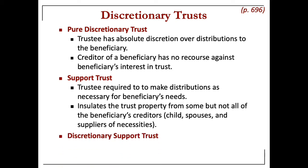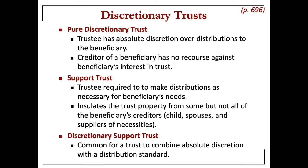Then there's a discretionary support trust, which is a trust that tries to combine absolute discretion with some type of distribution standard. These are generally treated like pure discretionary trusts.